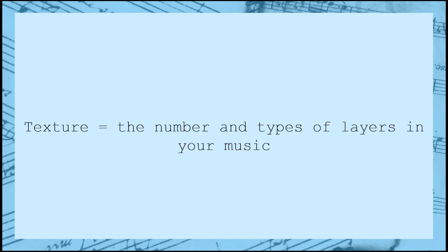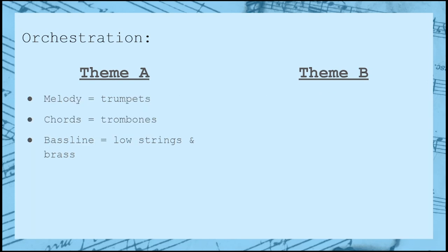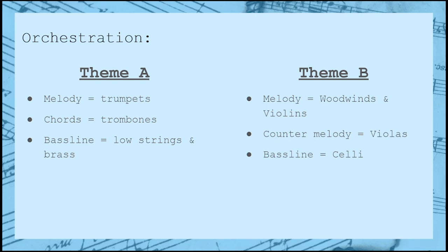Texture refers to the number and types of layers used in your music. The most typical texture for theme A is melody plus chords plus bassline, while the typical texture for theme B is melody plus countermelody plus bassline. In our example, theme A has the trumpets on melody, trombones on the chords, and low voices on the bassline — woodwinds also add some ear candy, but that's optional. Theme B bounces the melody around to different woodwind instruments, with the violins offering support, the violas performing the countermelody, and the celli playing the bassline.